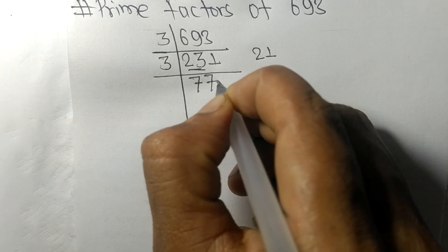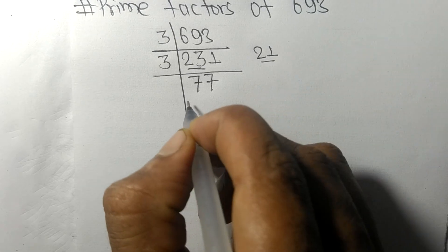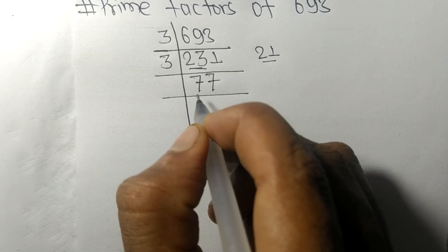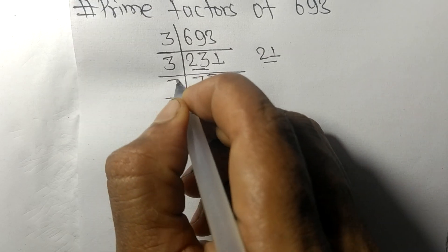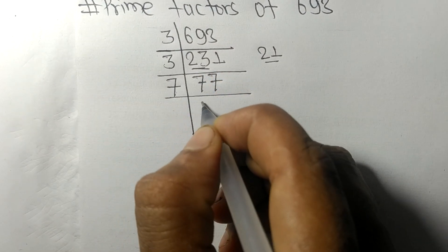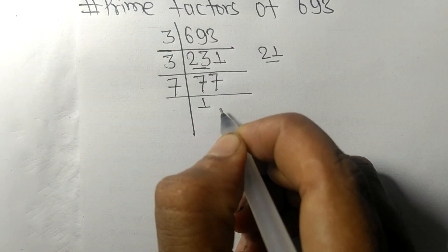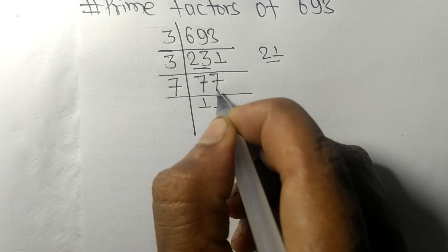77 is exactly divisible by 7. 7 times 1 is 7, 7 times 1 is 7. Now we got 11.